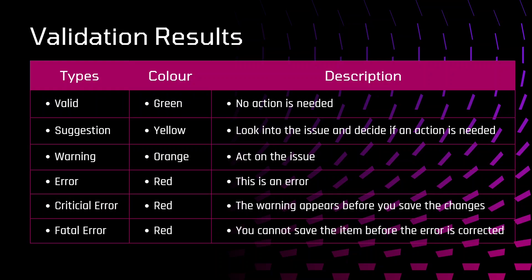Fifth is Critical Error — it is denoted in red and the warning appears before you save the changes, so accordingly you can act on it. Sixth is Fatal Error — it is denoted in red, and you cannot save the item before the error is corrected. You need to first resolve that error, and then only you can save the item.